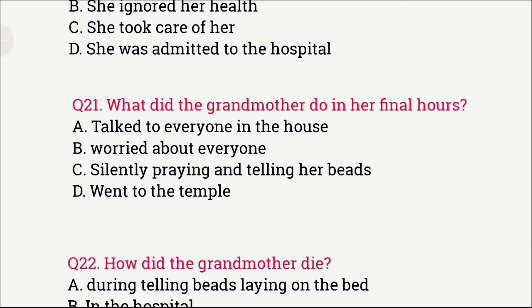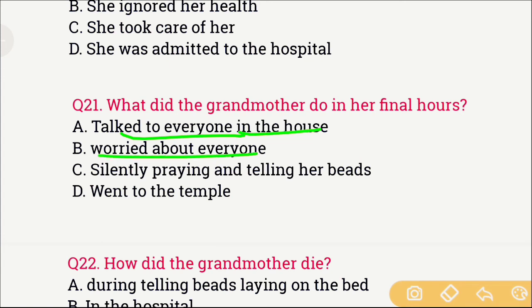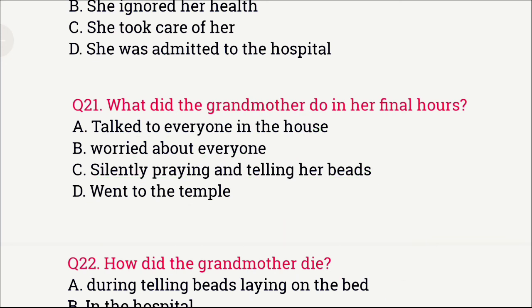Question number 21: What did the grandmother do in her final hours — the last few hours before her death? The options are: A) Talk to everyone in the house, B) Worried about everyone, C) Silently praying and telling her beads, and D) Went to the temple. The right answer is option C — silently praying and telling her beads.